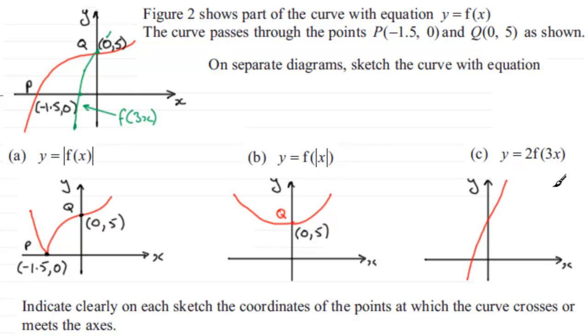Now we need to mark in the points where it crosses the y-axis. Well it was at (0, 5), now we've multiplied it by 2, it's going to be at (0, 10). So this point here is now going to be at (0, 10).